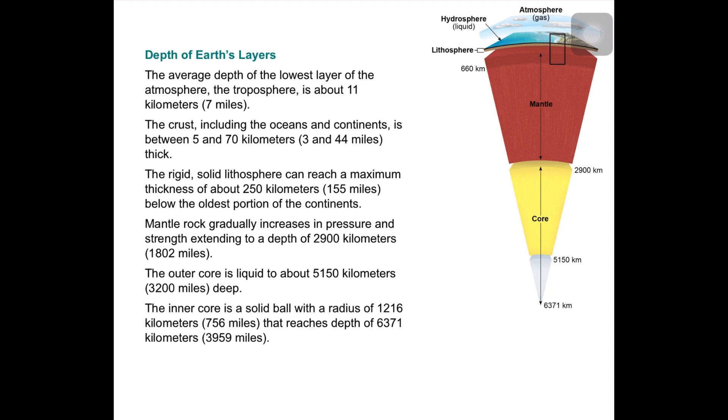The average depth of the lowest layer of the atmosphere, the troposphere, is about 11 kilometers. The crust, including the oceans and continents, is between 5 and 70 kilometers (3 and 44 miles) thick. The rigid, solid lithosphere can reach a maximum thickness of about 250 kilometers (155 miles) below the oldest portions of the continents.